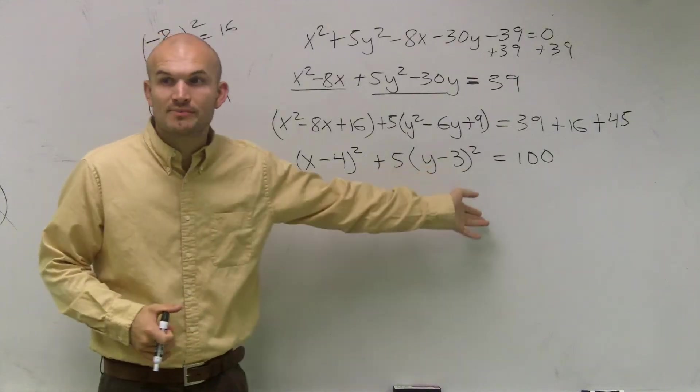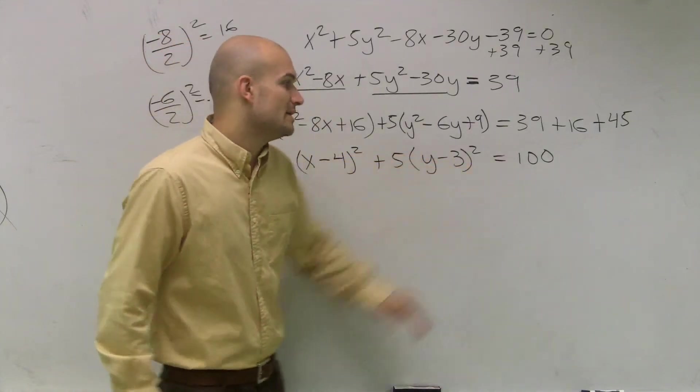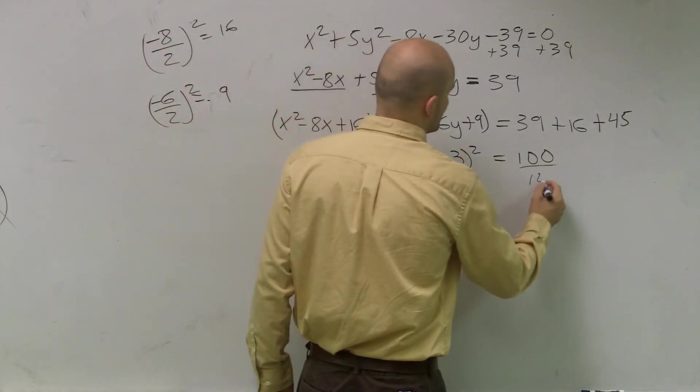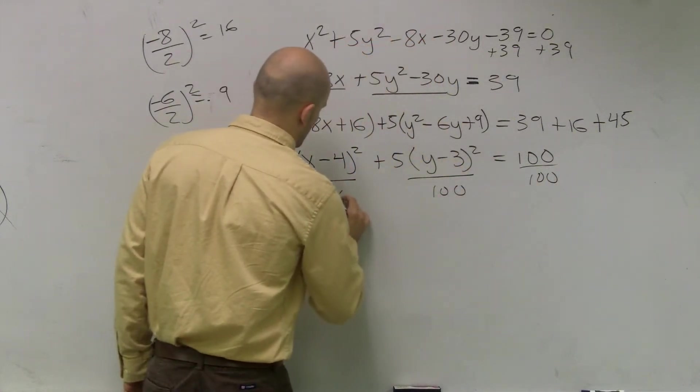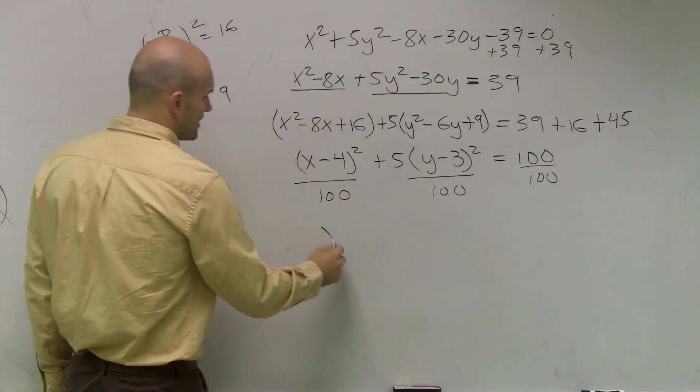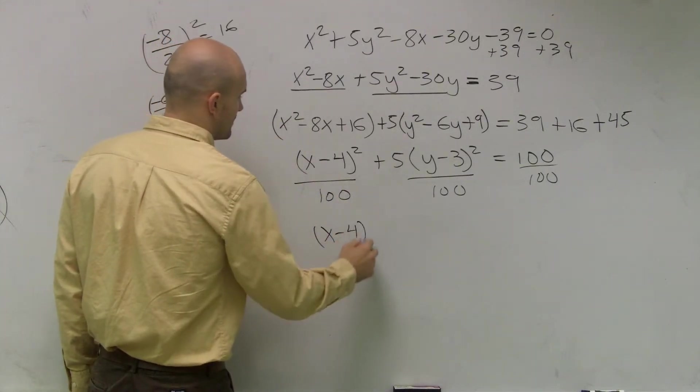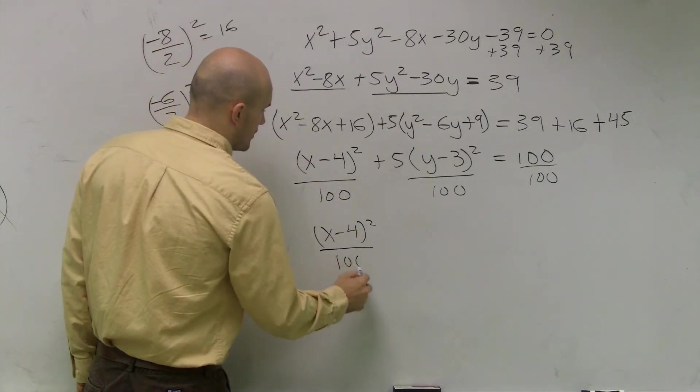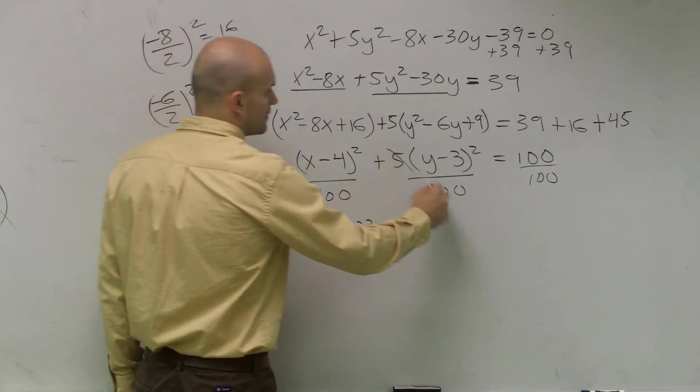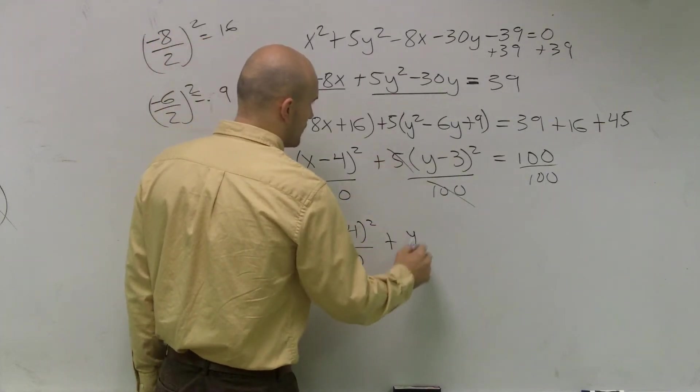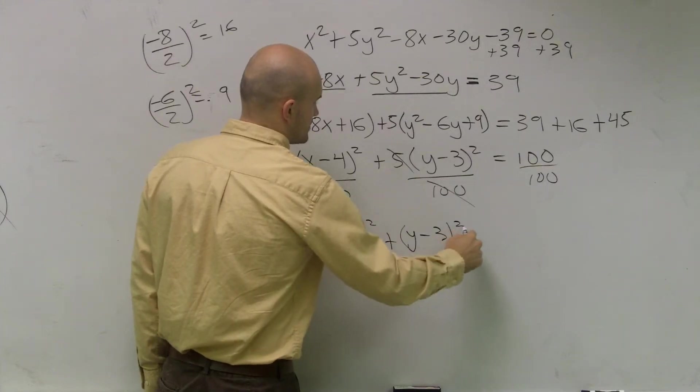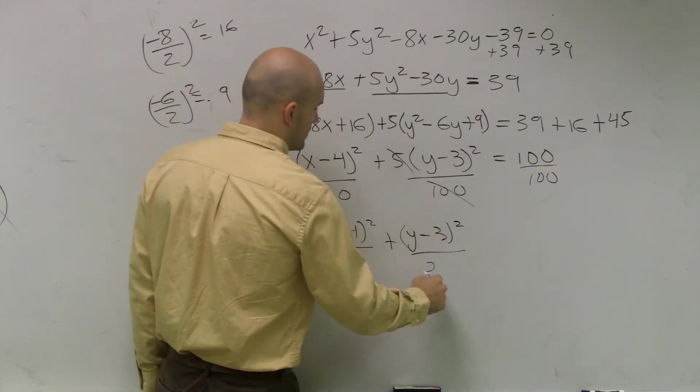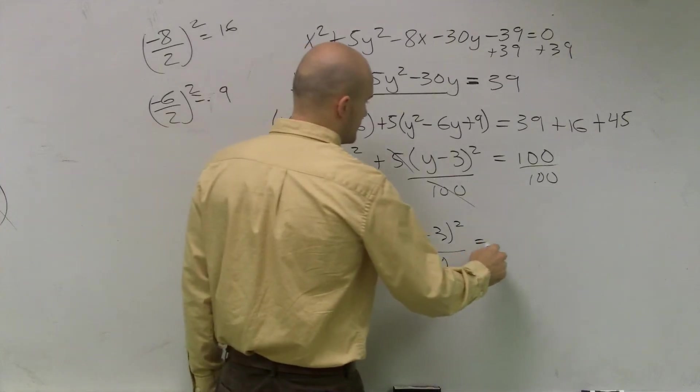we need to see if we have an a squared and a b squared, and we want them to equal 1, so I'll just divide by 100. So finally, I'm going to have x minus 4 squared over 100, that's going to give us y minus 3 squared over 20 equals 1.